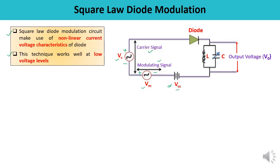Different frequency terms appear at the output of the diode and are applied to a tuned circuit consisting of an inductor and capacitor. The function of this tuned circuit is to tune to the carrier frequency with a narrow bandwidth, passing the sidebands along with the carrier while rejecting all other frequencies. Therefore, the output of the tuned circuit contains the carrier, the upper sideband, and the lower sideband — producing the amplitude modulated wave.